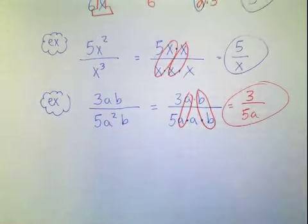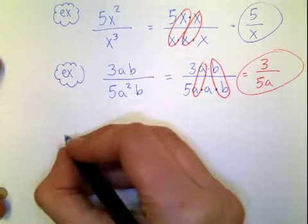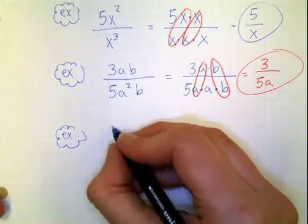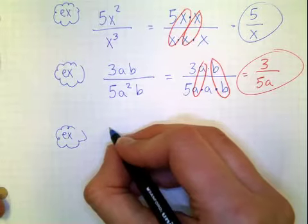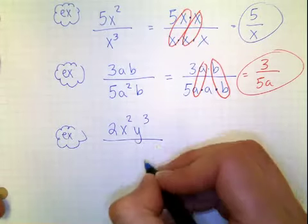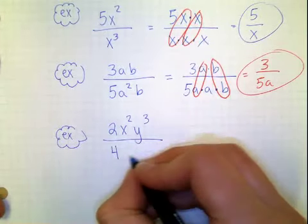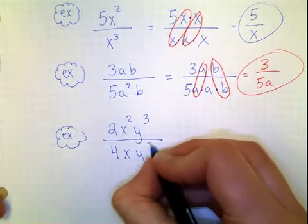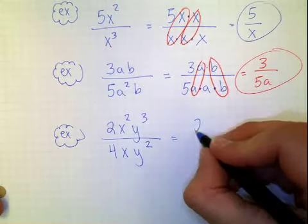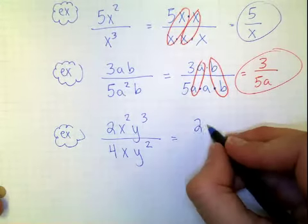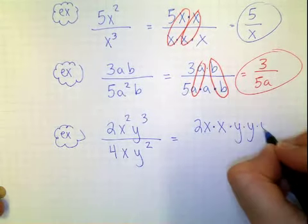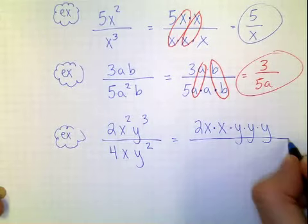Now they can get much harder than this. And they can have some weird answers. So let me show you some other types. Another one here. Let's say you had 2x squared y to the third over 4xy squared. It's just getting bigger is all it is. So what I'm going to do is I'm going to make the 2. And the x squared is going to be x times x. And the y to the third is going to be y times y times y.